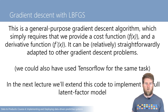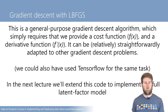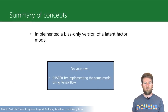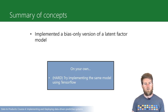In this lecture we've implemented the simple bias-only version of our latent factor model. In the next lecture we'll try and implement the full latent factor model — the ideas will be exactly the same, we'll just need to compute a slightly more complicated cost function and derivative function. On your own, if you'd like to try this and have some experience with TensorFlow from the previous parts of this course, you might try re-implementing this model using TensorFlow rather than this gradient descent library.